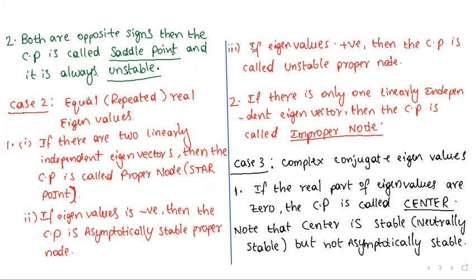Case 2: Equal or repeated real eigenvalues. If there are two linearly independent eigenvectors, the critical point is called a proper node (also known as a star point). If eigenvalues are negative, it is an asymptotically stable proper node; if positive, it is an unstable proper node. If there is only one linearly independent eigenvector, the critical point is called an improper node.